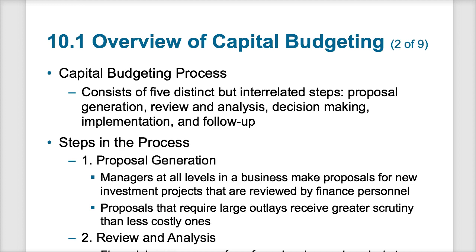There are five distinct steps in capital budget processing that are going to help us analyze and interpret what's the best process or budget to organize and implement. Those five steps are: proposal generation, review and analysis, decision making, implementation, and follow-up.